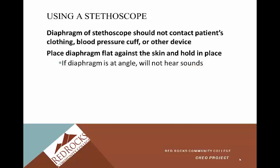The diaphragm of the stethoscope should not contact the patient's clothing, the blood pressure cuff, or other devices. A lot of this is about using the right size blood pressure cuff — if it's too large, it'll take up the entire patient's arm and the stethoscope won't fit on the brachial artery, and may end up touching the cuff. This also creates background noise. Place the diaphragm flat against the skin and hold it in place. A common issue with students is the diaphragm not sitting flat, which means they can't hear adequately and pick up outside background noises.